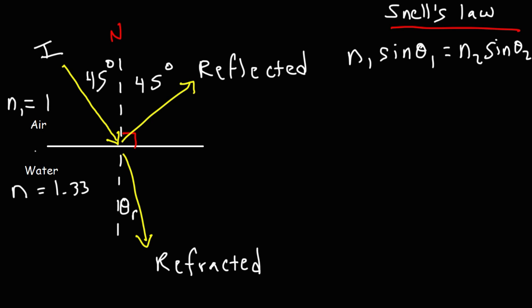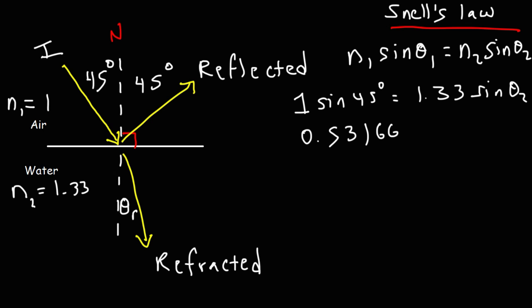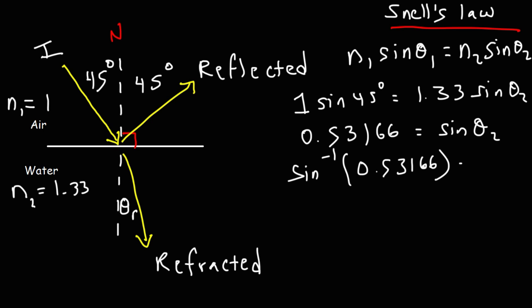N1 is 1 for air and N2 is 1.33 for water. So it's 1 times sine 45, which equals 1.33 times sine theta 2. Sine 45 equals the square root of 2 divided by 2, which is 0.7071. Dividing by 1.33 gives 0.53166 equals sine of the second angle. Using the arc sine function, theta 2 equals 32.1 degrees — that is the angle of refraction.